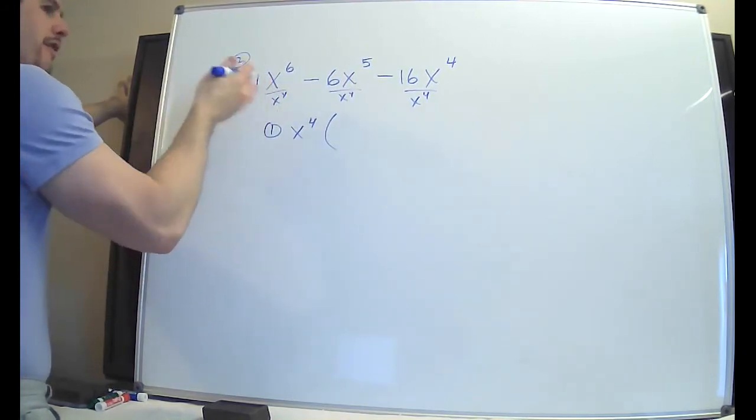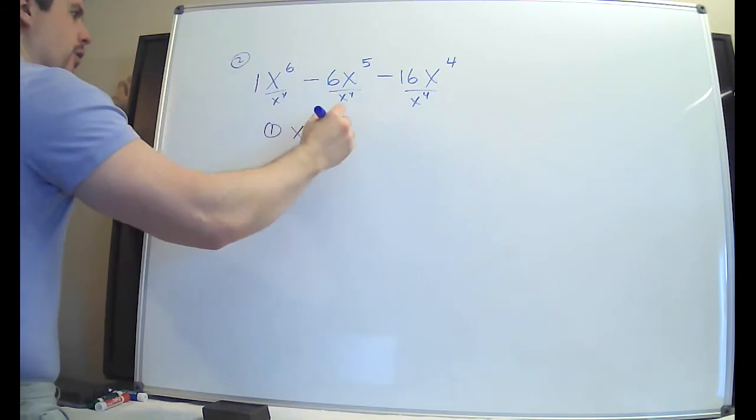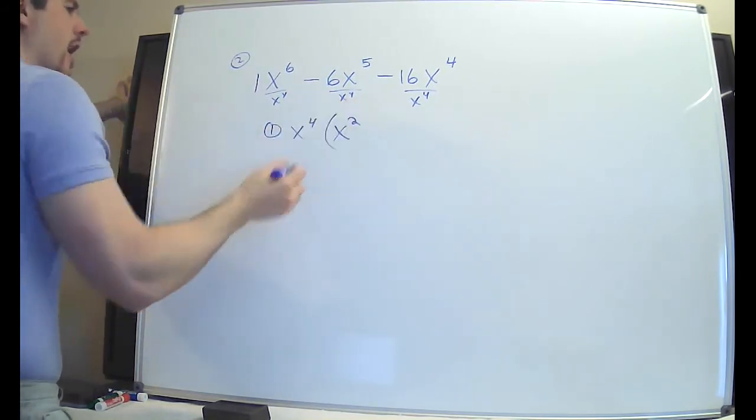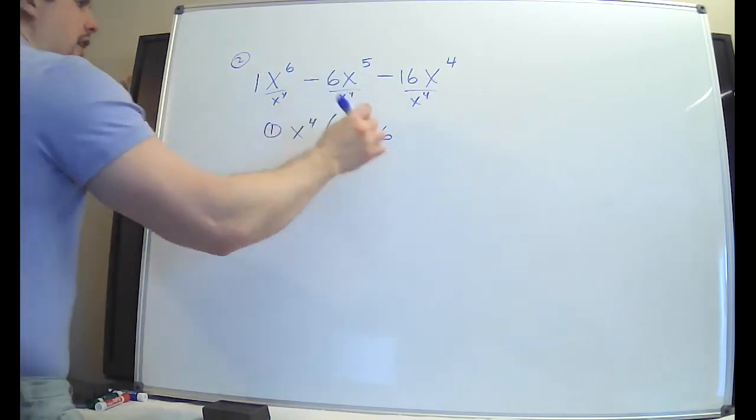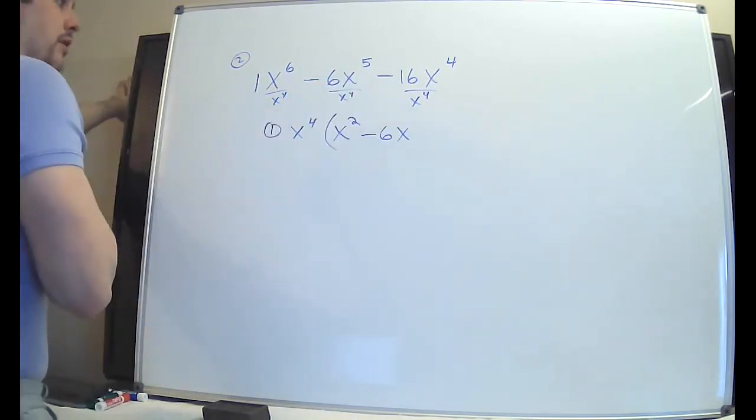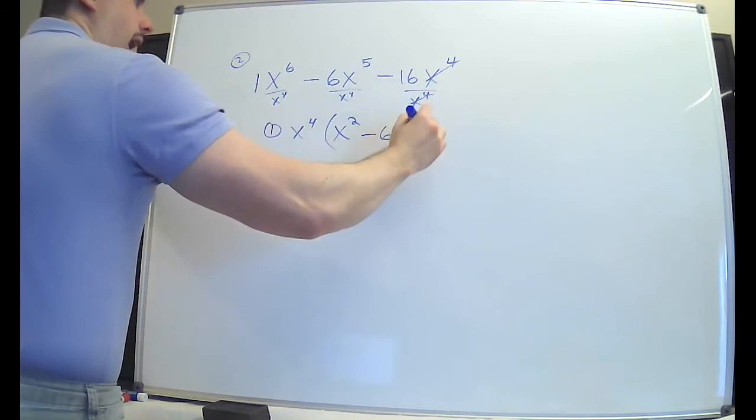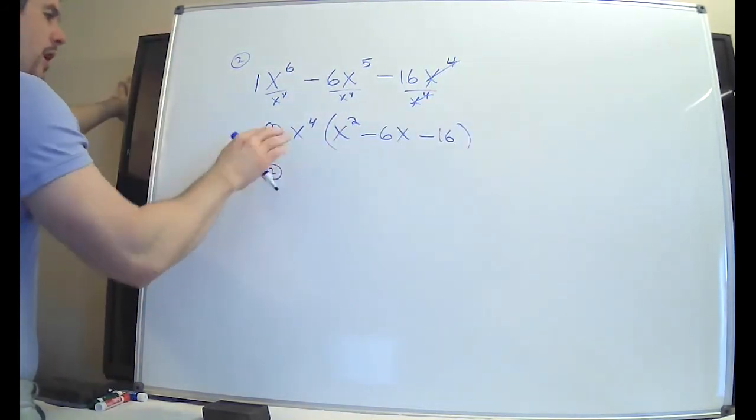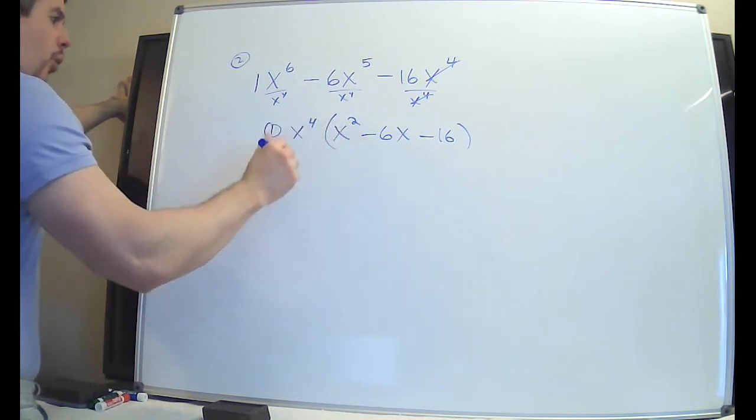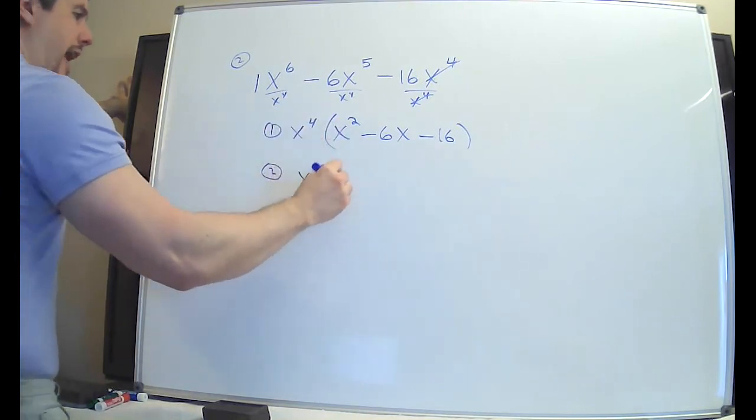x6 divided by x4, remember, factoring is like division. So 6 take away 4 is 2. So you're left with x squared. The negative 6 has to stay there. But the x5 take away x4 leaves you with x to the 1. Here, they cross out entirely, and you're just left with 16. And now again, that's step one. You factor out the greatest common factor. What's left over continues to factor.